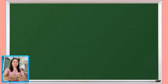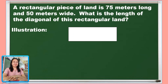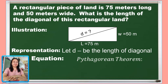Now let me discuss a geometry-related problem. A rectangular piece of land is 75 meters long and 15 meters wide. What is the length of the diagonal of this rectangular land? The length measures 75 meters and the width is 50 meters, and we are asked to find the diagonal. We will use D as the length of the diagonal. To find the equation, we use the Pythagorean theorem: the square of the hypotenuse equals the sum of the square of the altitude and the square of the base.